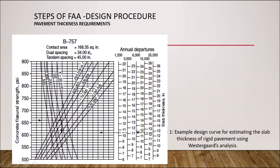The contact area equals 168.35 square inches, dual spacing is 34 inches, and tandem spacing is 45 inches. Aircraft weights are given on the graph: 125,000, 150,000, 175,000, 200,000, 225,000, and 250,000 pounds. Annual departures shown include 1,200, 3,000, 6,000, 15,000, and 25,000.